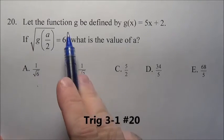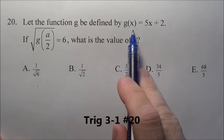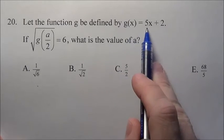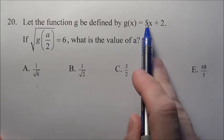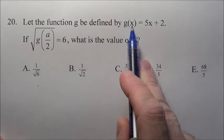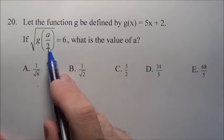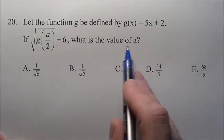Here's problem 20. Let the function g be defined by g(x) = 5x + 2. So g(x) is defined as 5 times some x value plus 2, 5 times whatever we put in here plus 2. It says if the square root of g(a/2) equals 6, what is a?